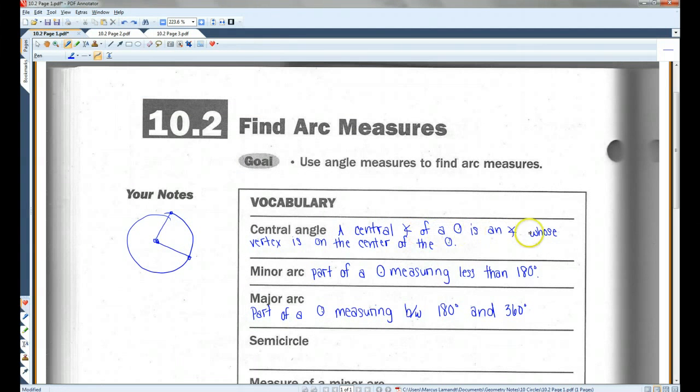I'm going to go over these three first, and I'll draw a picture over here. A central angle of a circle is an angle whose vertex is on the center of the circle. So for example, what I've drawn here, this angle is a central angle because its vertex is on the center.